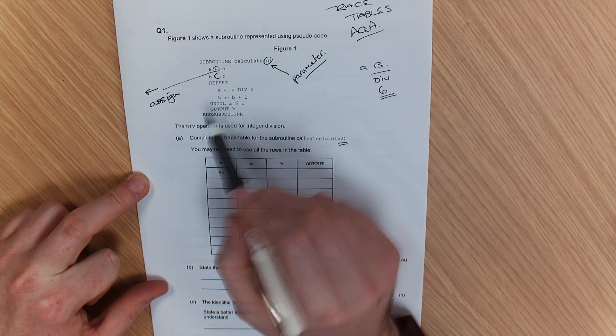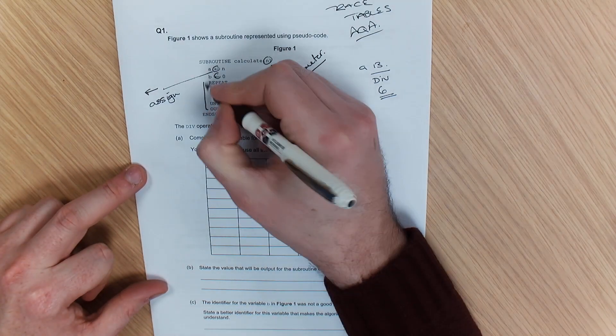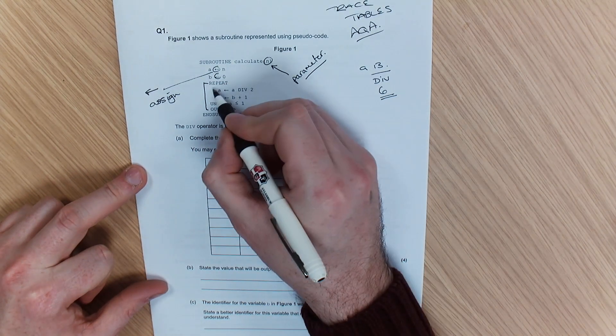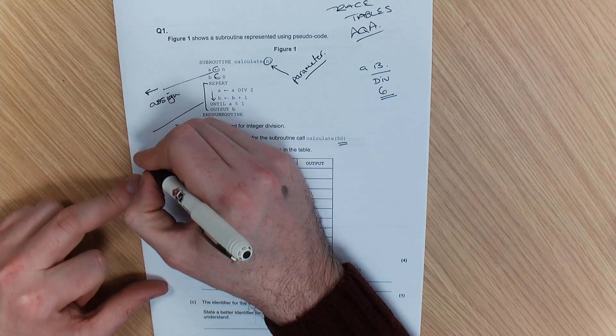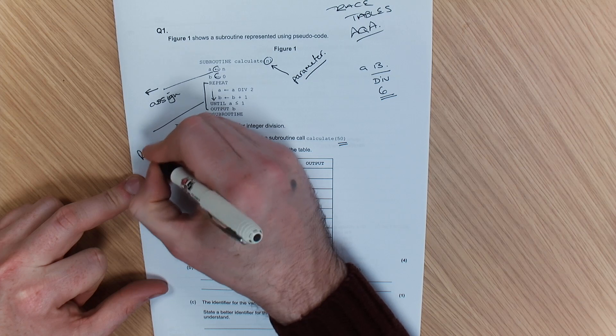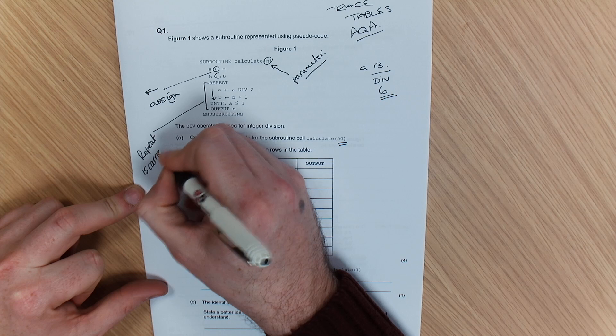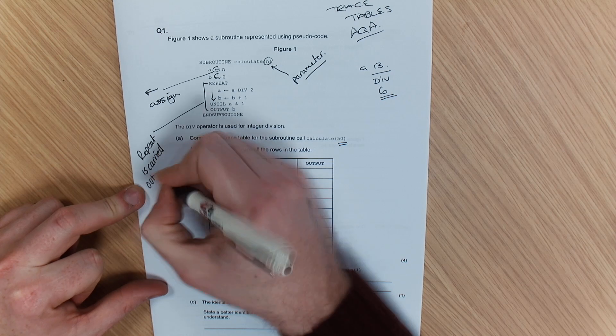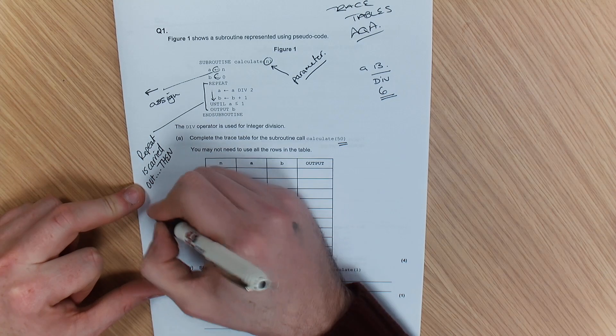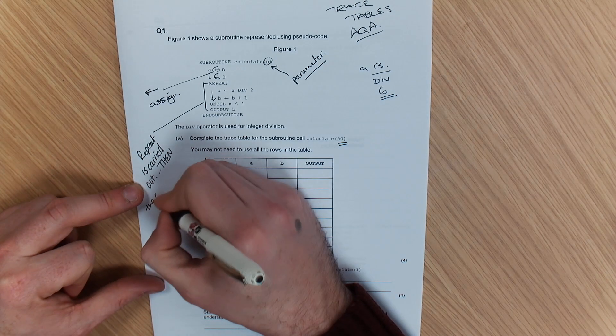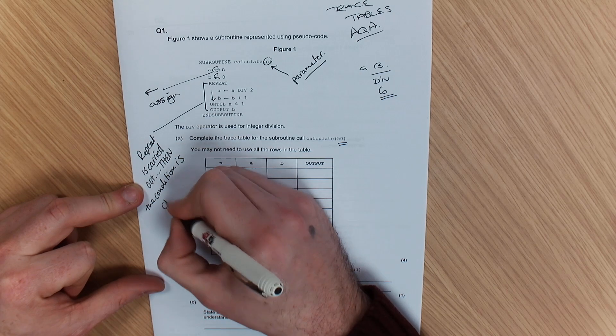Because this will help us as we carry on with the rest of this. Now, this type of repetition as well, this will carry this out. All of this happens before it checks the condition. So the repetition, so the repeat, is carried out, then the condition is checked.